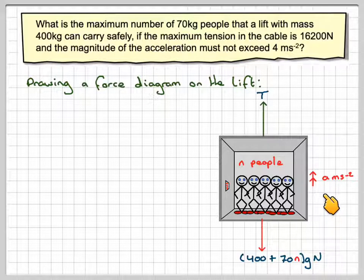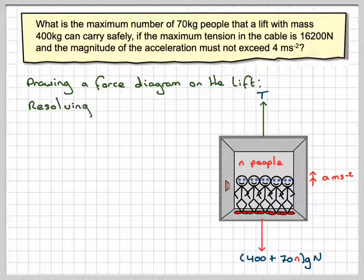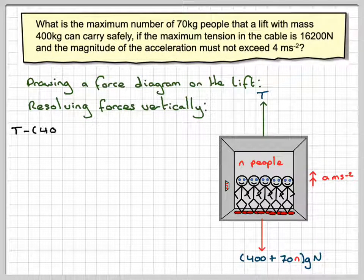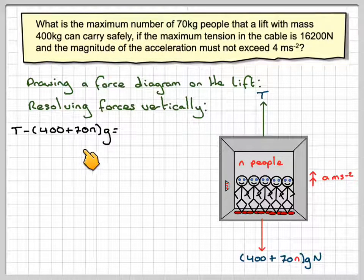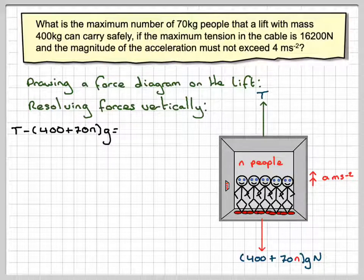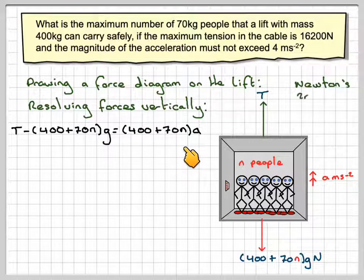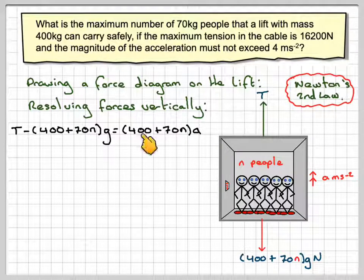And then we've got the acceleration and we take positive to go upwards. So if we now resolve forces vertically, we've got that T minus 400 plus 70N G is going to be equal to the mass which is 400 plus 70N times A. This is Newton's second law.